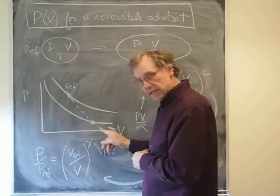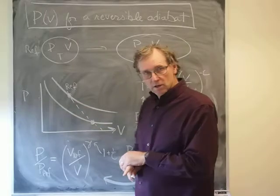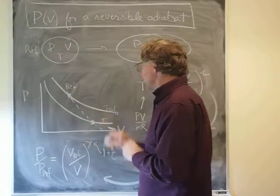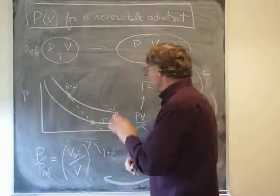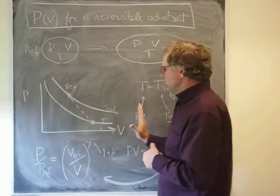follow this reversible adiabatic and end up on this cooler isotherm. So this would be T_ref and that would be the final temperature, which is cooler than the starting temperature. Now, a starting point on this analytically